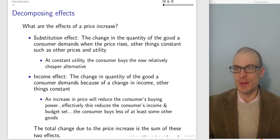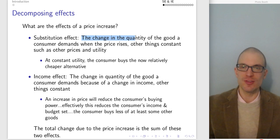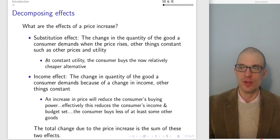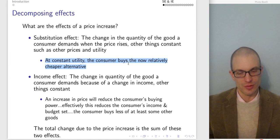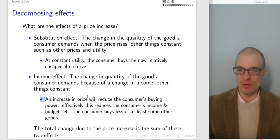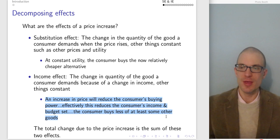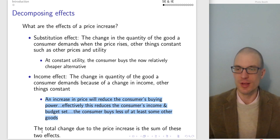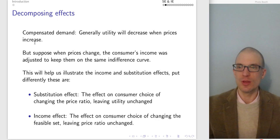When there is a price increase, we can decompose the effect into the substitution effect and the income effect. The substitution effect is the change in quantity demanded when the price rises, other things constant — including other prices and utility. At constant utility, the consumer buys the relatively cheaper alternative. The income effect is the change in quantity demanded because of a change in income, other things constant. An increase in price reduces the consumer's buying power, effectively reducing income and the budget set. The total change due to the price increase is the sum of these two effects.